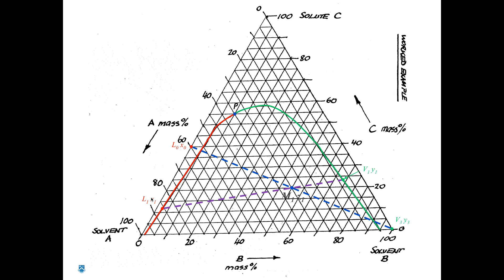In stage 2, we took the raffinate from stage 1 and mixed it with fresh solvent, which has a composition of pure solvent B — it doesn't contain any C or any A.